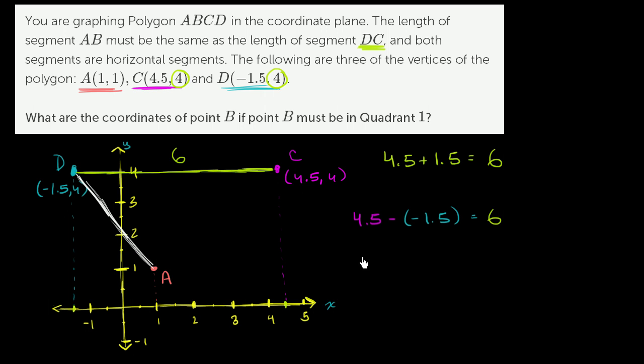Point B is going to be some place out here. It has to have the same vertical value or the same y value as point A. So its y coordinate is going to be 1. Point B is going to be out here some place.